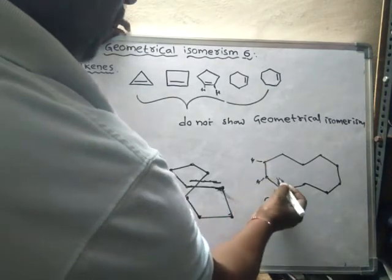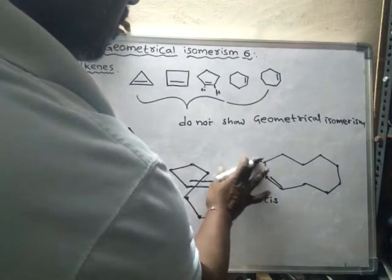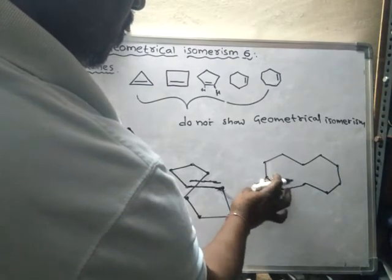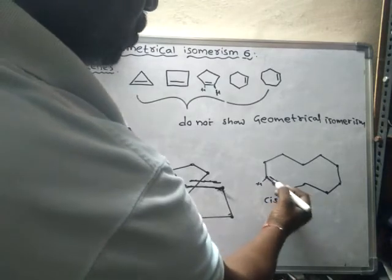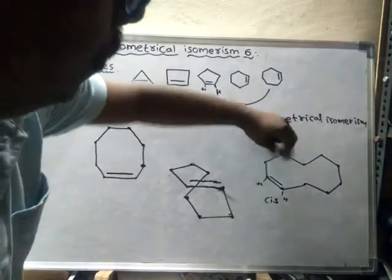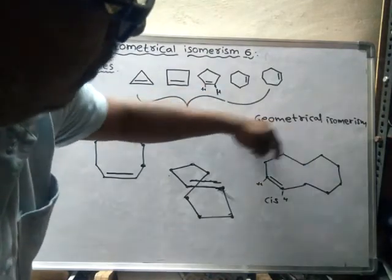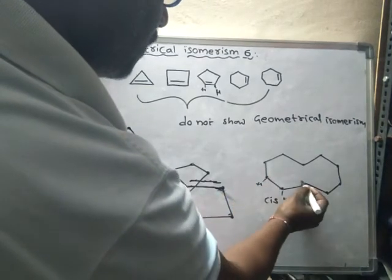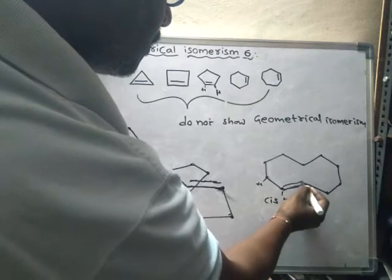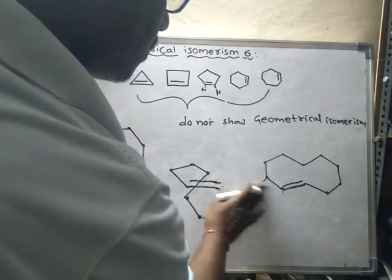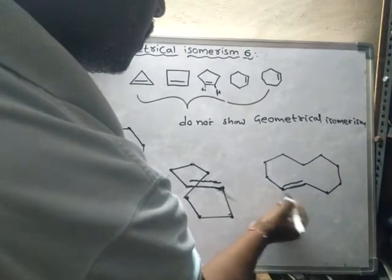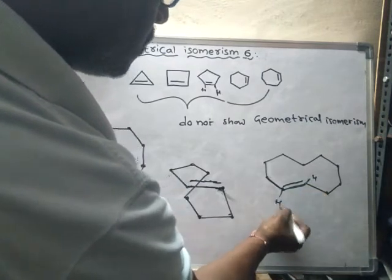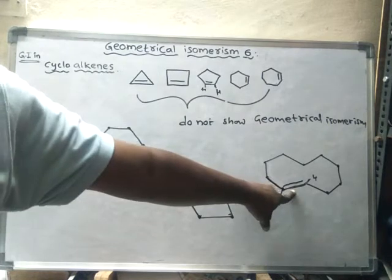If the double bond is placed at a different position, the two hydrogen atoms are again on the same side — cis form. But if the double bond is placed such that the groups are on opposite sides, the compound is in the trans form, and trans form is possible.